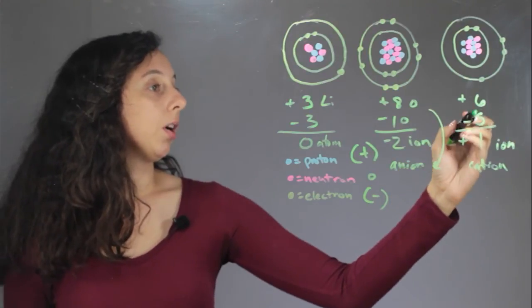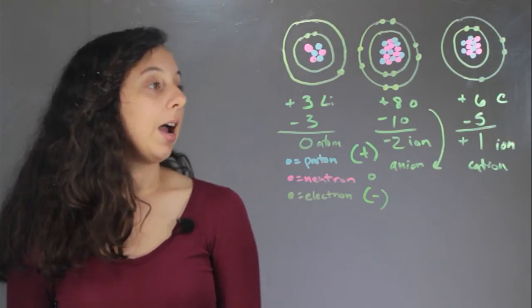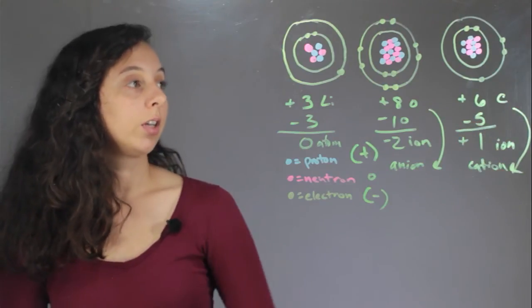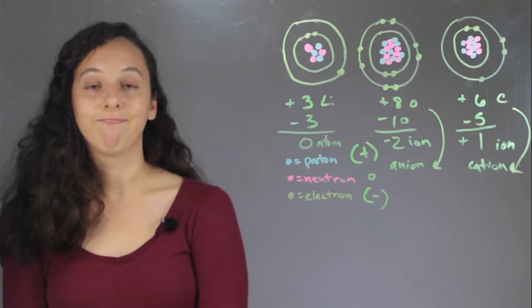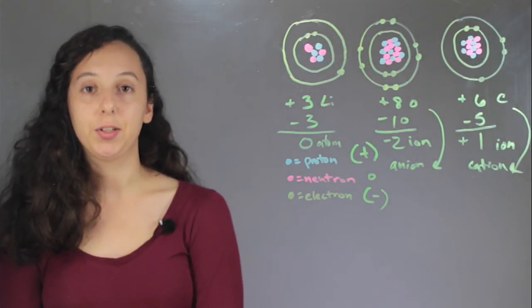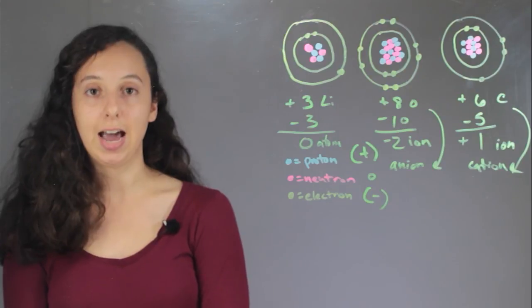And this had six protons, so it's a carbon ion and it's a carbon cation, which we can also call carbocation. It has a nickname. I'm Robin Higgins and this has been Similarities in Ions and Atoms.